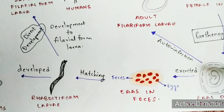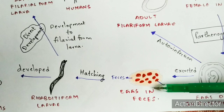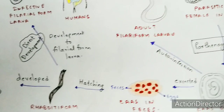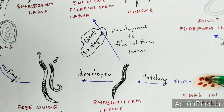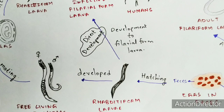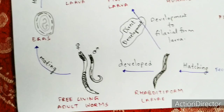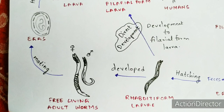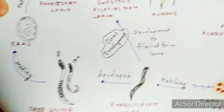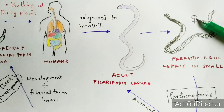When the human being excretes fecal material, the eggs present in the intestinal mucosa get transported along with the feces to the external environment. Within the feces, hatching of the eggs occurs, and rhabditiform larvae are produced. These rhabditiform larvae then develop into free-living adult worms.